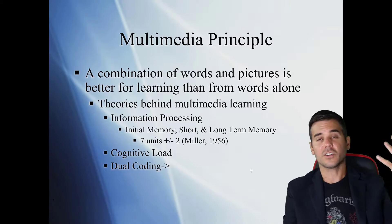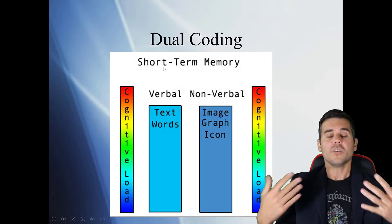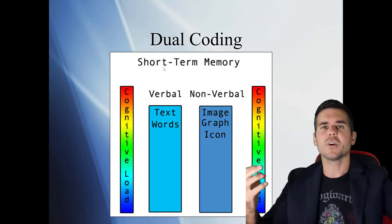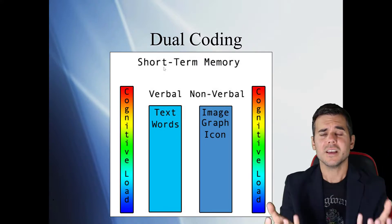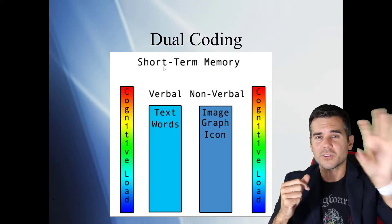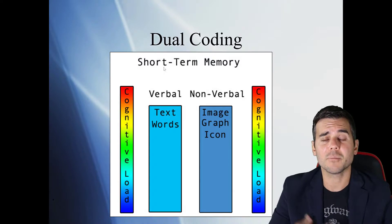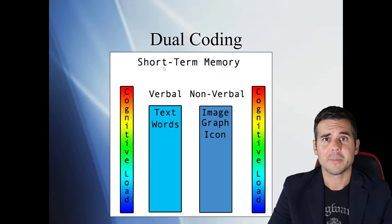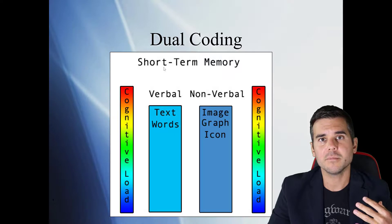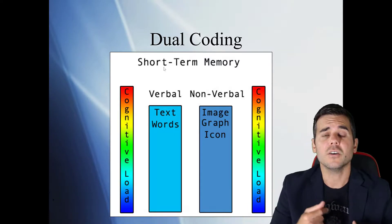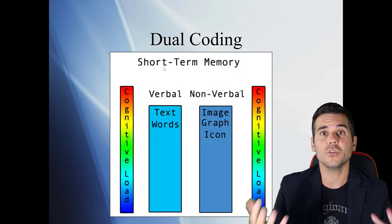That leads us to cognitive load and dual coding. We know that multimedia allows us to store both verbal and nonverbal information. I can store a certain amount of verbal and nonverbal before I start forgetting things. When presenting content, I can give someone a few concepts at a time before I need to get them to remember them or discard them before moving on. If I try to give them 12 concepts at once, we're going to overload their working memory.